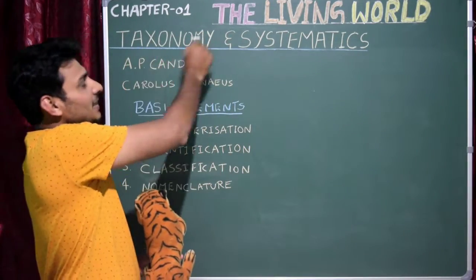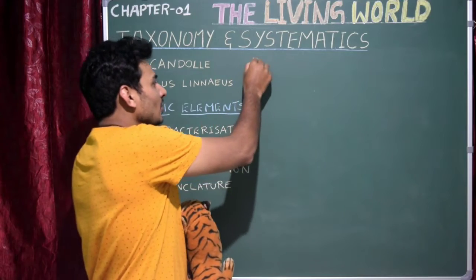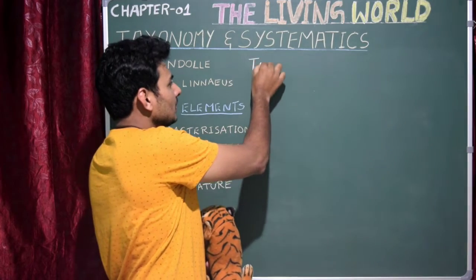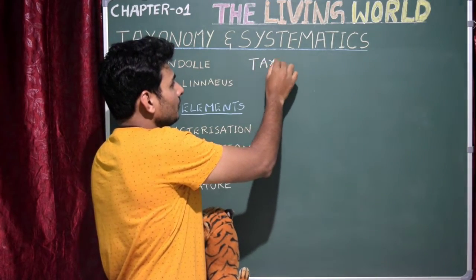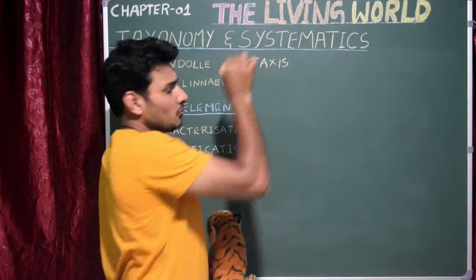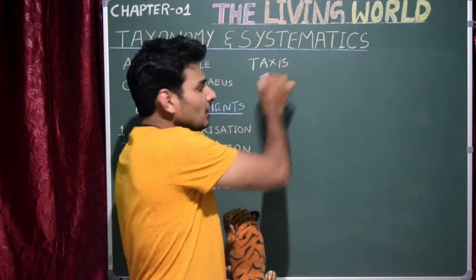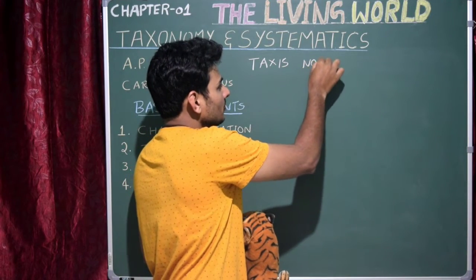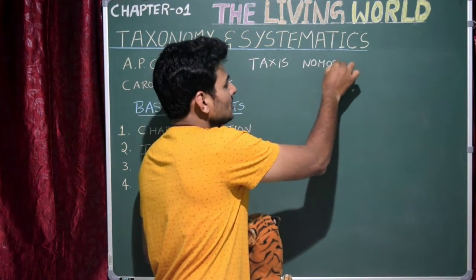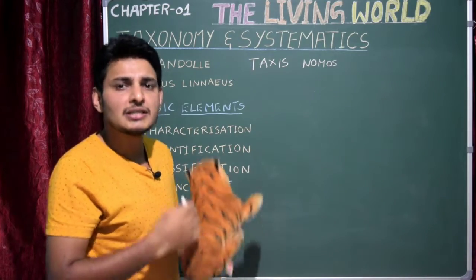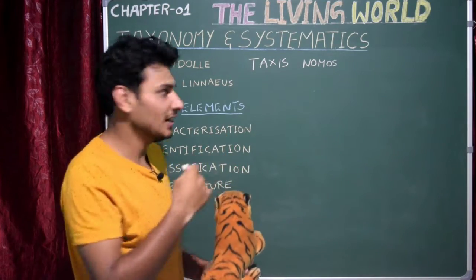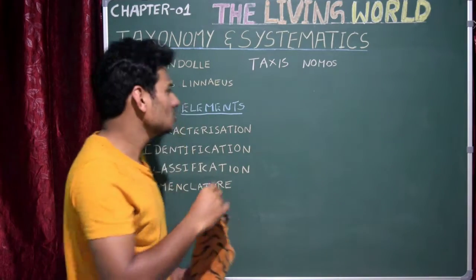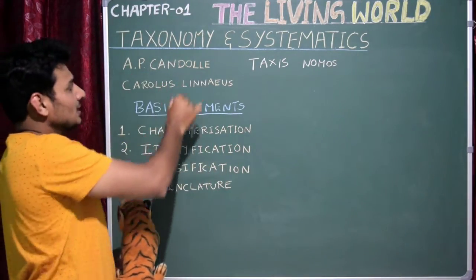So what is exactly taxonomy? I will split the word taxonomy into two parts. One part is 'taxis' — the meaning of taxis in Greek is 'arrangement.' The other part is 'nomus,' meaning laws. So 'arrangement using a set of rules or laws' is actually called taxonomy, and this particular word is derived from a Greek word.